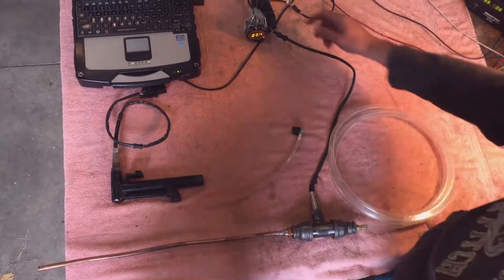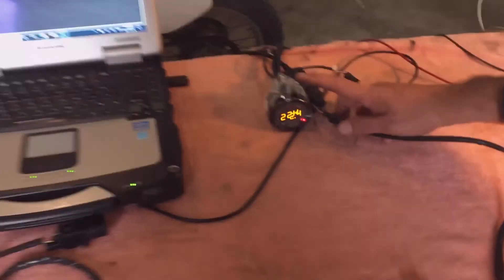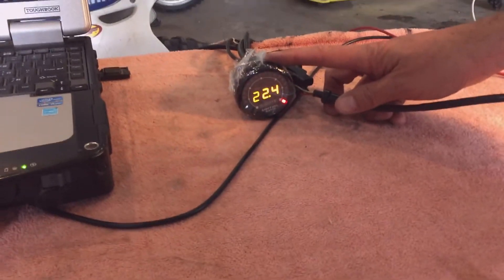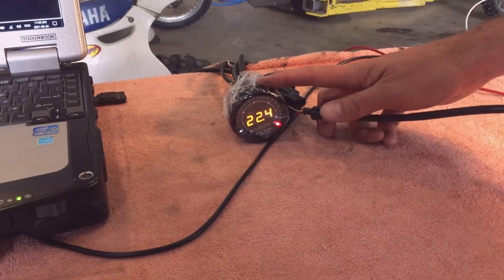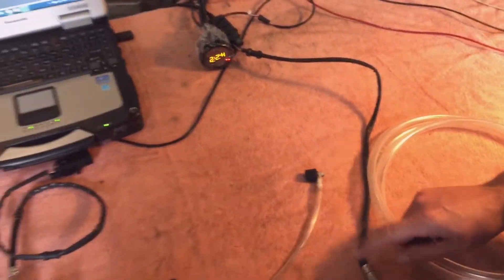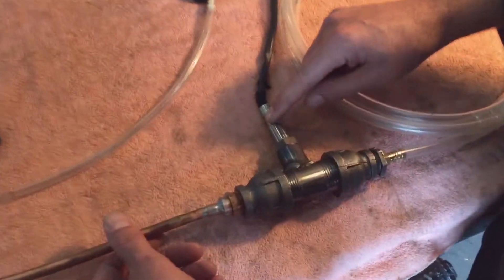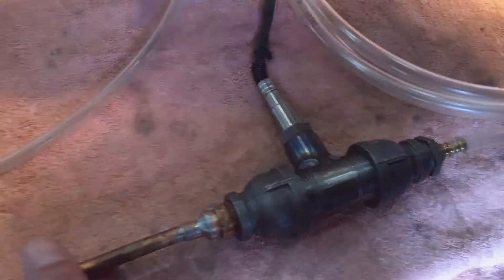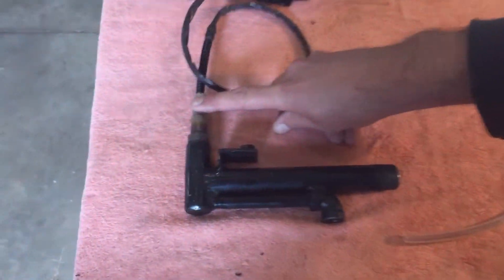What we have is the MTX-L from Innovate. This is an air fuel ratio gauge with a wideband sensor, so these are wideband O2 sensors, and this is on both of these rigs now.